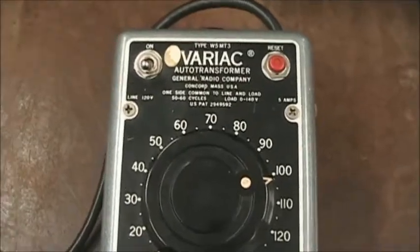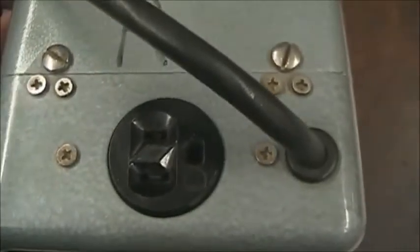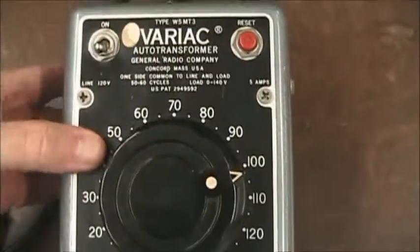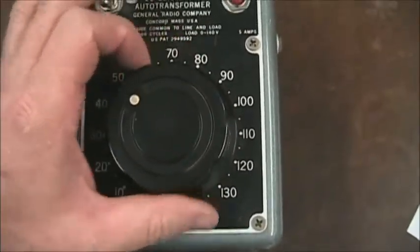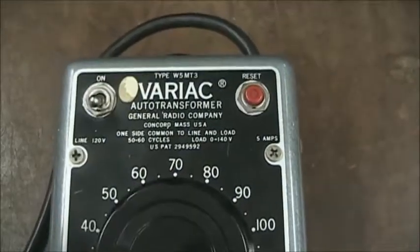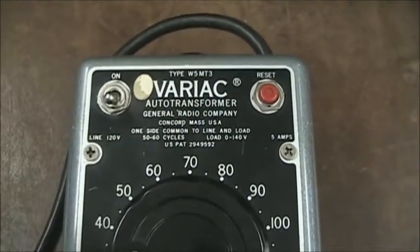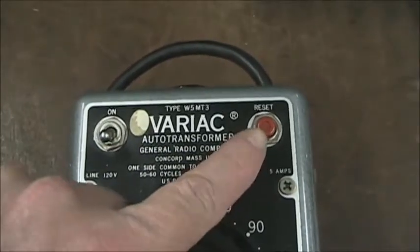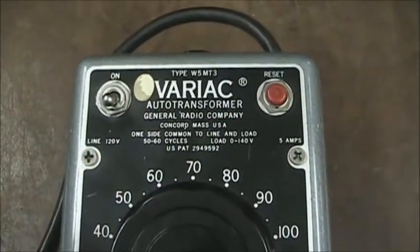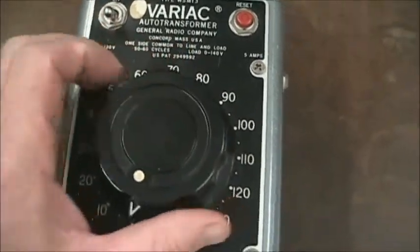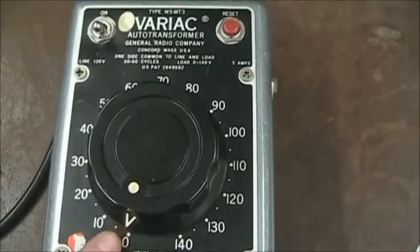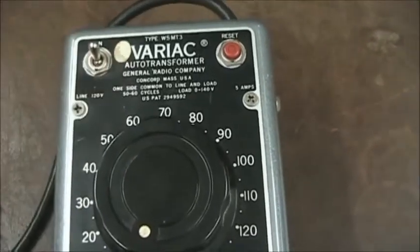The first element is a variac. A variac is a special form of transformer that is adjustable to allow us to adjust the source voltage. The variac has an input power cord, an output power outlet, and it also has an on-off control, a variable voltage control, and a circuit breaker. When we use the variac, we normally have the voltage set to zero before we energize the variac.